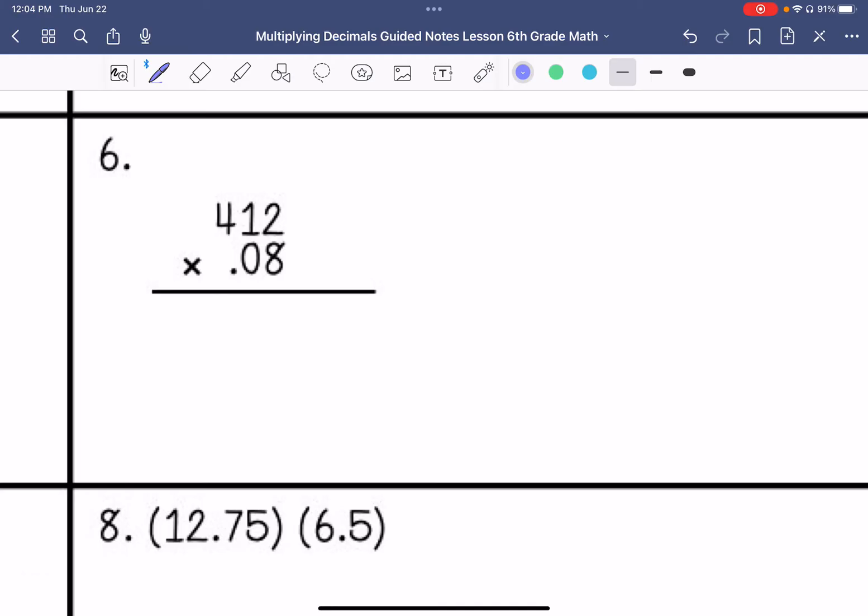Alright, 8 times 2 is 16. 8 times 1 is 8. Plus that 1 is 9. And 8 times 4 is 32. So we have 1, 2. That placeholder. And this is just going to be 0 the whole time. So we will add these. And then we have 1, 2. So 1, 2. So this is 32.96.